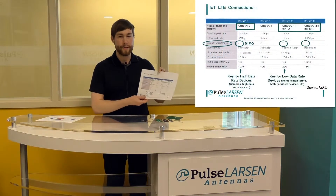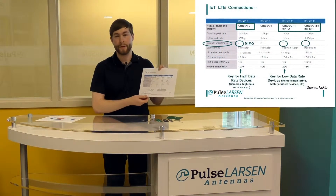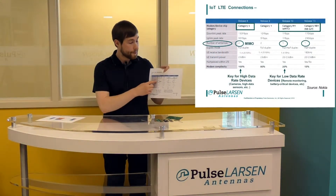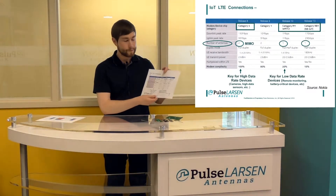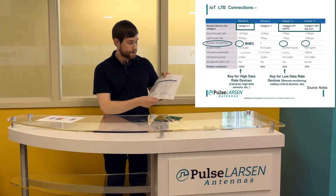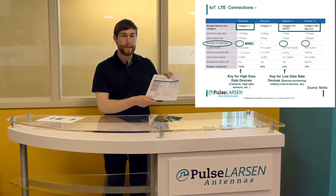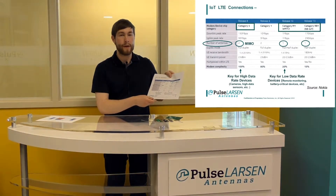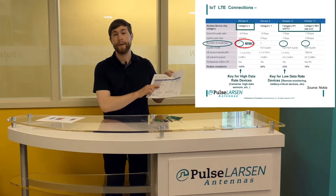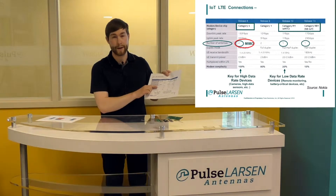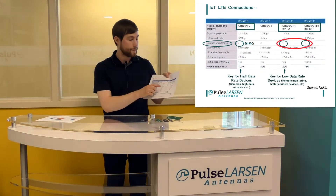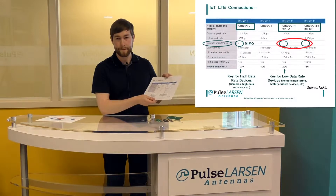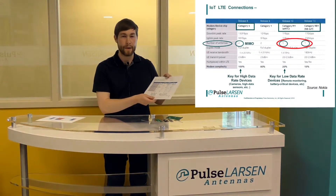This table shows some of the simple differences between LTE category 4 and M1 and NB-IoT. One thing to notice right away is that LTE category 4 allows MIMO — use of two antennas — so you can have a different antenna sending data while one's receiving data. This isn't the case for M1 or NB-IoT; you're limited to a single antenna for both sending and receiving data.